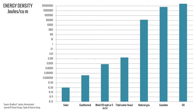Geothermal, wind, and tidal water score significantly higher, but their contributions are dwarfed by oil, gasoline, and natural gas. Oil, the highest ranking, has an energy density of 45 billion joules per cubic meter.